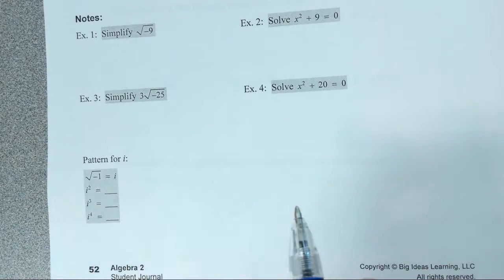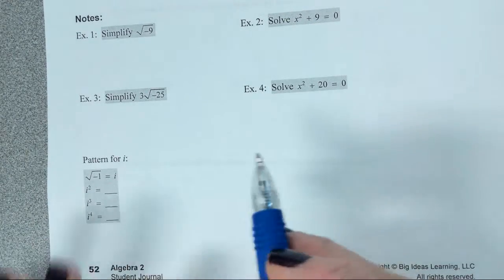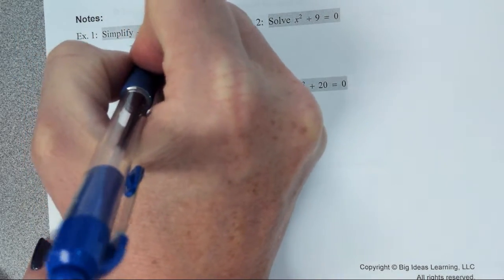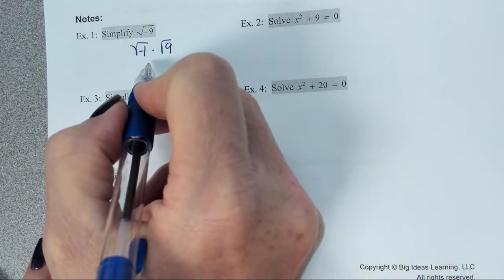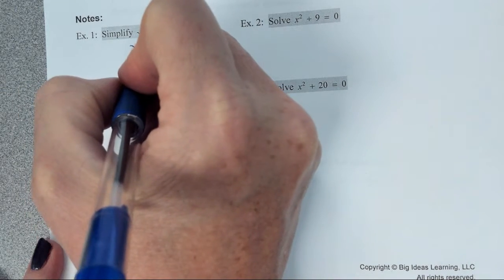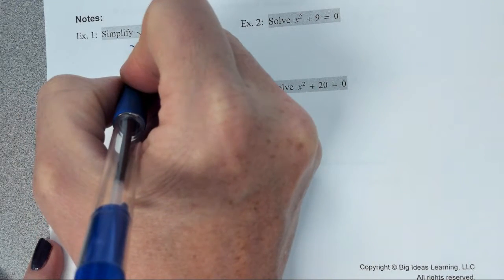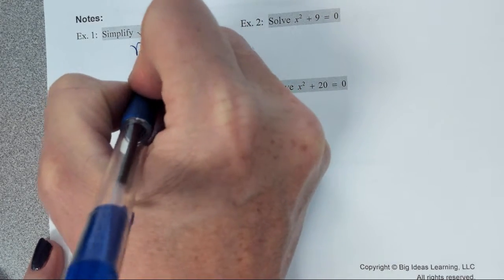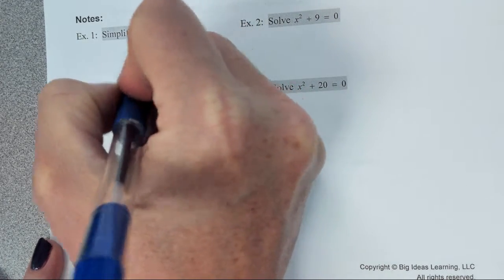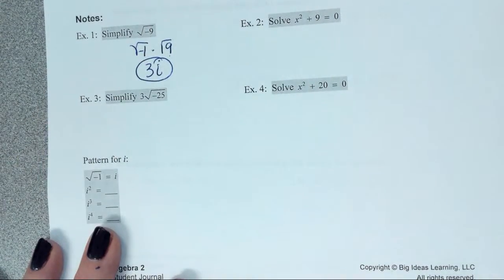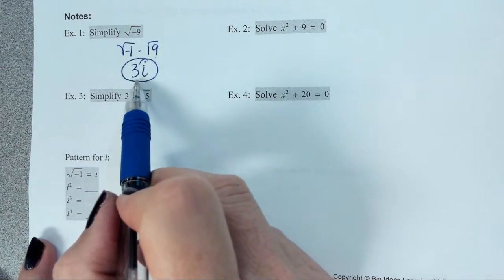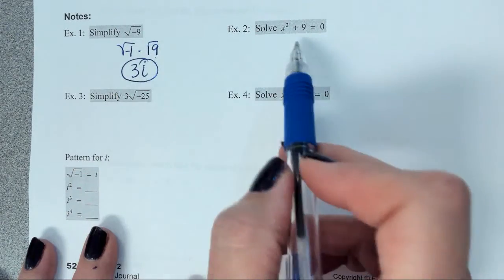Let's look at example 1. The square root of negative 9 — I can think of it as the square root of negative 1 times the square root of 9. The square root of negative 1 is i, and the square root of 9 is 3. So my answer is 3i.